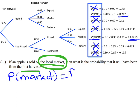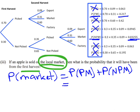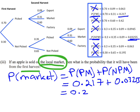We've got two possible ways: the probability of being picked in the first harvest and then going to market, plus - notice I say 'or' but write plus, because in probability 'or' is plus and 'and' is times - the second option is that it was not picked the first harvest, picked the second harvest, and then sent to market. Adding those two probabilities together gives us 0.217 plus 0.03255, which gives a probability of 0.24955.